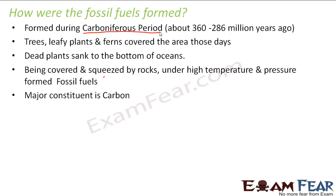The major constituent of fossil fuels is carbon — whether it is coal, petroleum, or natural gas. It is because of the presence of carbon that these fossil fuels are used as a source of energy, since when carbon burns a lot of energy is produced. Since all the trees, plants, leaves, and swamps of that period contained carbon, that period was known as the carboniferous period — the term 'carboniferous' also came from carbon.